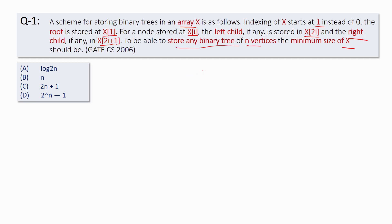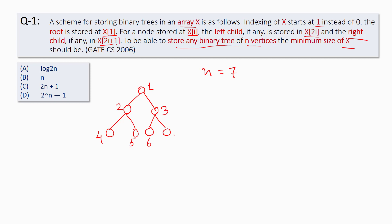Let us take an example with n equal to 7. If the binary tree is a complete binary tree, we can store 7 nodes with indexing: root node at index 1, then 2, 3, 4, 5, 6, and 7. It is clear that the maximum index belongs to the leftmost child at any level.